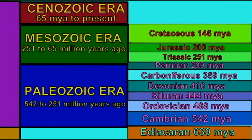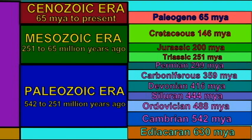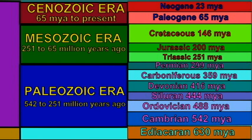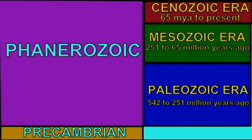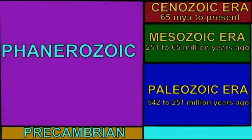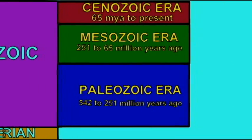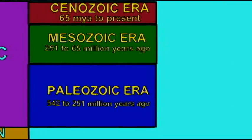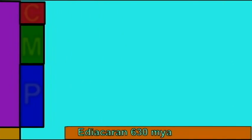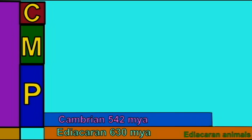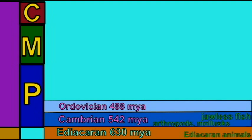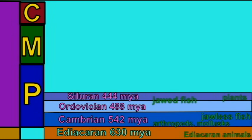These eras — the Paleozoic, Mesozoic, and Cenozoic — can then be divided into periods. The Paleozoic era can be split into the Cambrian period, where the first fish and diverse arthropods evolve, and the Ordovician and Silurian periods, where the first jawed fish evolve. The Devonian period sees the first amphibians evolve.